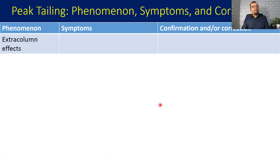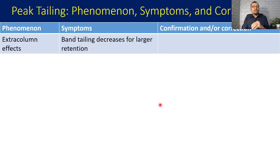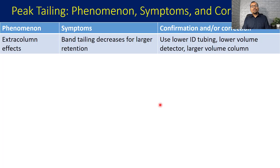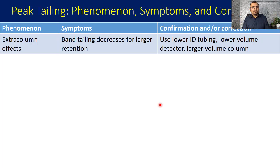Extra column effects always impact peak broadening. Band tailing decreases for larger retentions, so for early-eluting compounds you will always have a greater amount of peak tailing compared to late-eluting compounds. You can use lower inner diameter tubings to reduce the extra column volume, use detectors with lower volume, and consider using a larger column to have larger column volumes.